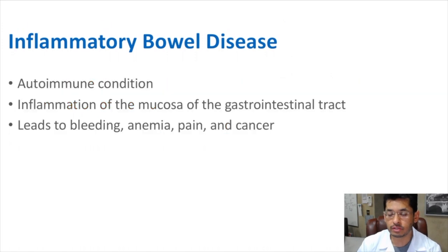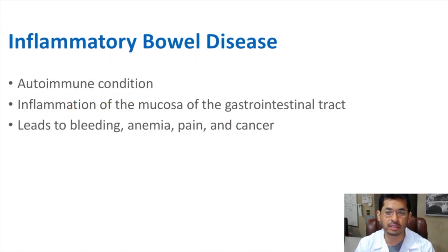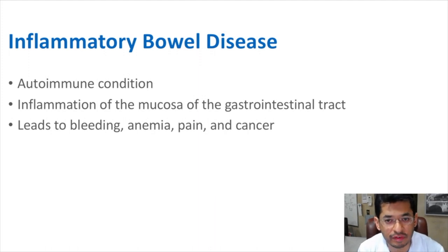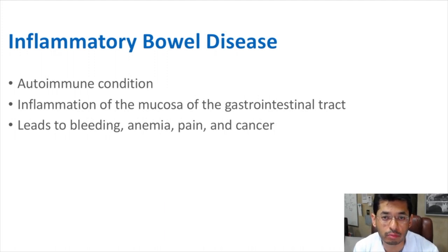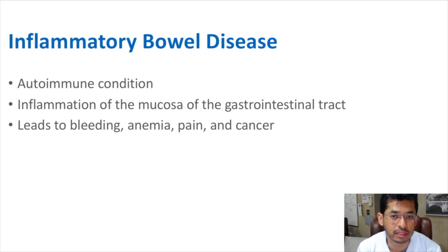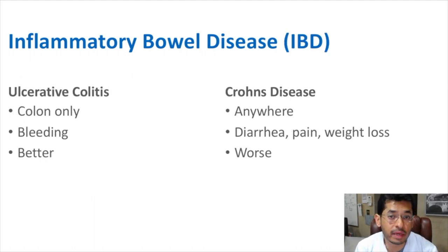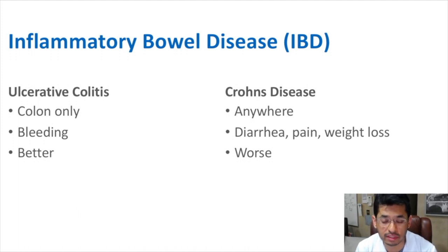As a summary of what we talked about before, IBD is considered an autoimmune condition in which you have inflammation of the mucosa of the GI tract that can lead to a lot of different symptoms, including bleeding, anemia or low blood count, pain, and sometimes if you have longstanding disease, it can lead to cancer as well. There are two main types of inflammatory bowel disease: ulcerative colitis and Crohn's disease.